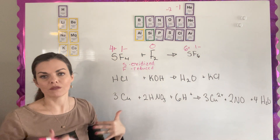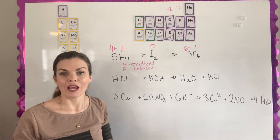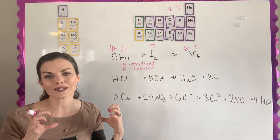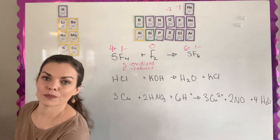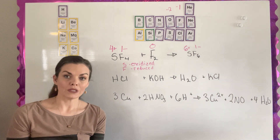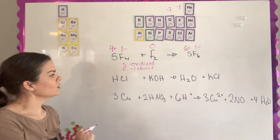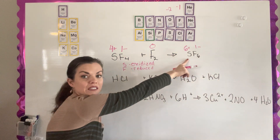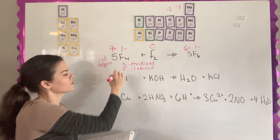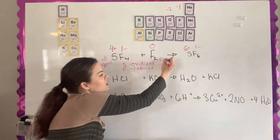Fluorine goes from zero in F2 to negative one in the product, so it is gaining an electron and is being reduced. Since there is movement of electrons, yes, this is a redox equation. For the agents: if a reactant is being reduced, we call it the oxidizing agent, because it's doing the oxidizing onto another reactant. So sulfur, which is being oxidized, is the reducing agent, and fluorine, which is being reduced, is the oxidizing agent.